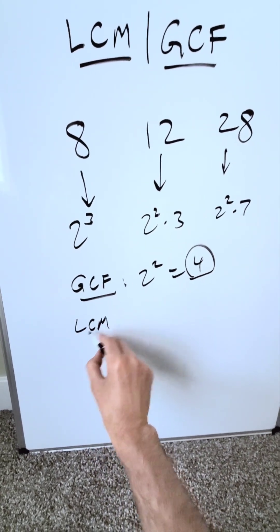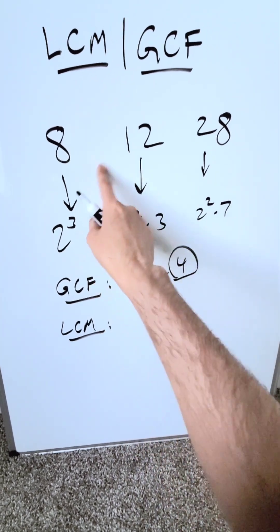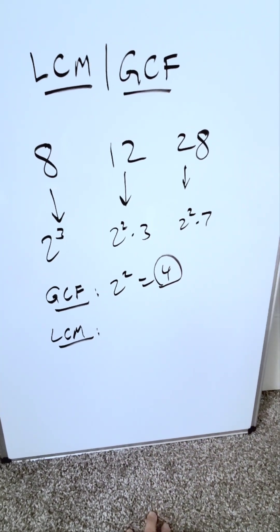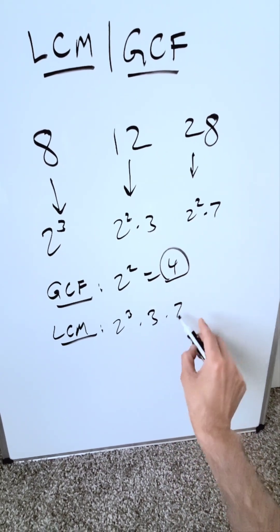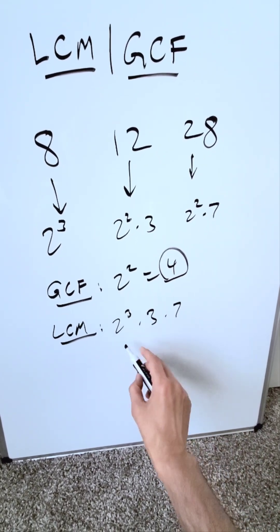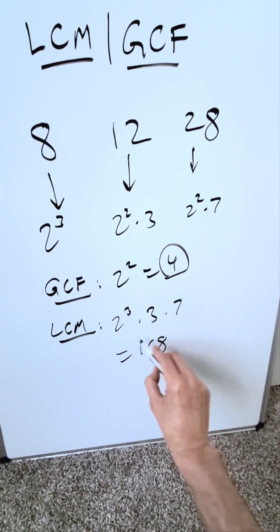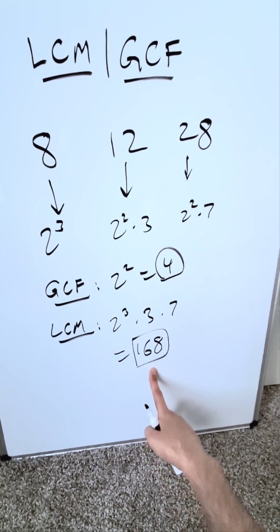What about lowest common multiple? What is that number for which these will go into? You have to look at the largest numbers. I'm looking at 2 cubed, then I have a 3 over here, then I have a 7. I have 21 times 8, and that will be 168.